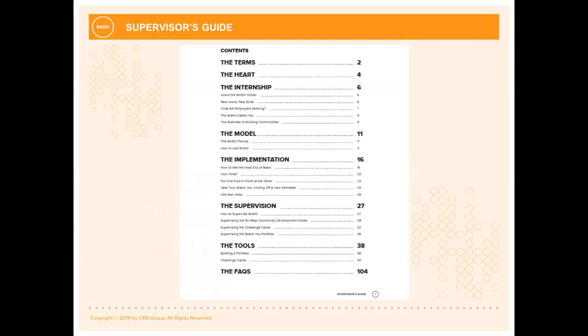We also talk about the brand called you. An article from Fast Company magazine outlined how important it is, regardless of your position or business, to understand the importance of branding yourself. The RA job allows your students to develop their brand that is reflective of their unique talents, skills, and leadership styles. The supervisor's guide digs into the model more and then gets into the implementation and supervision — which is really the meat of the book. It covers the three elements: the six-step model, the challenge cards, and the portfolio. We also get into how to get the most out of BASIC.